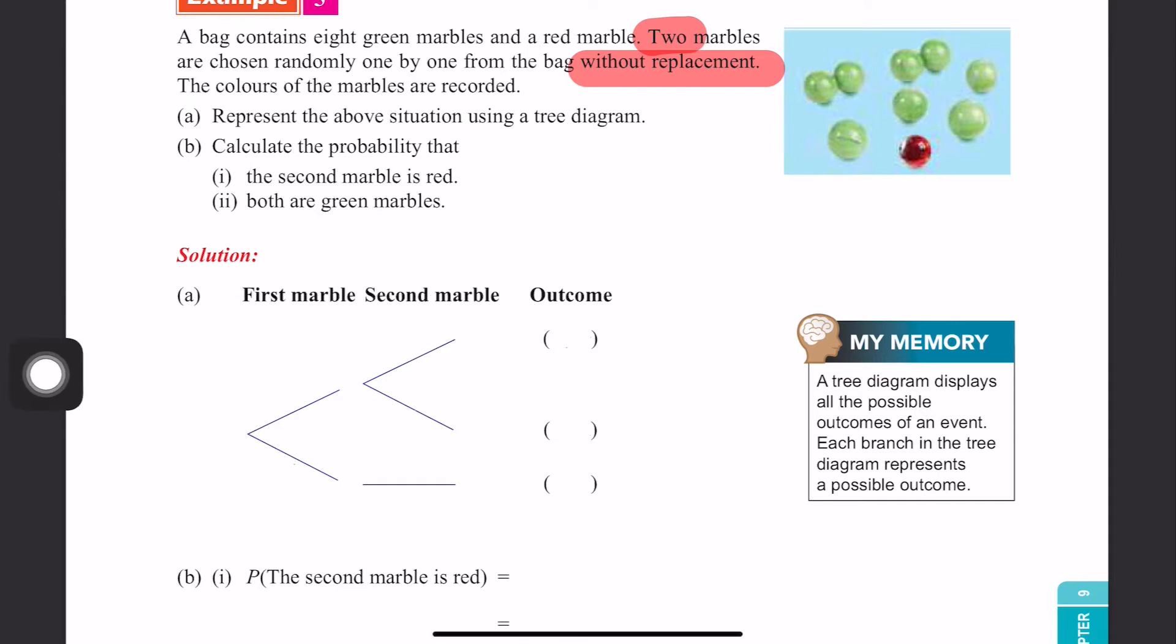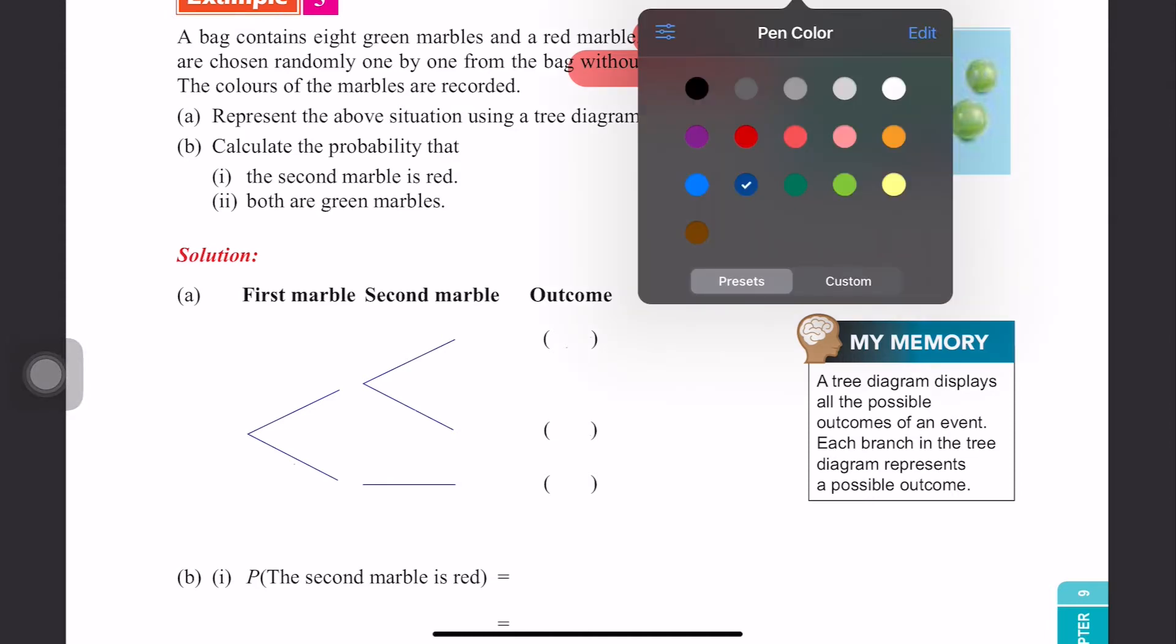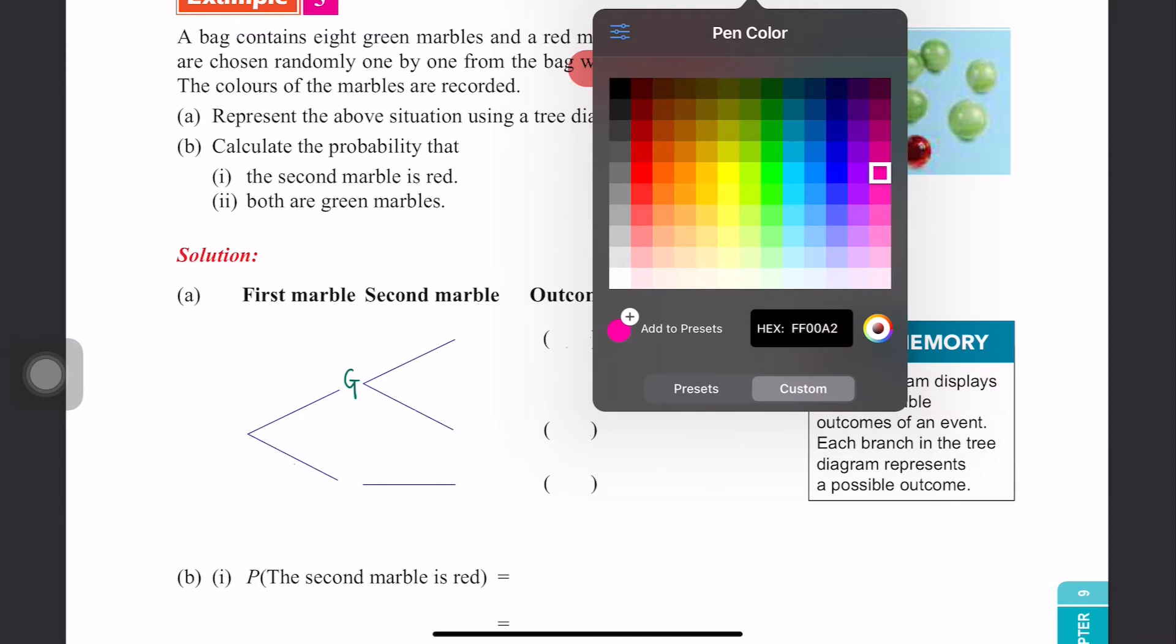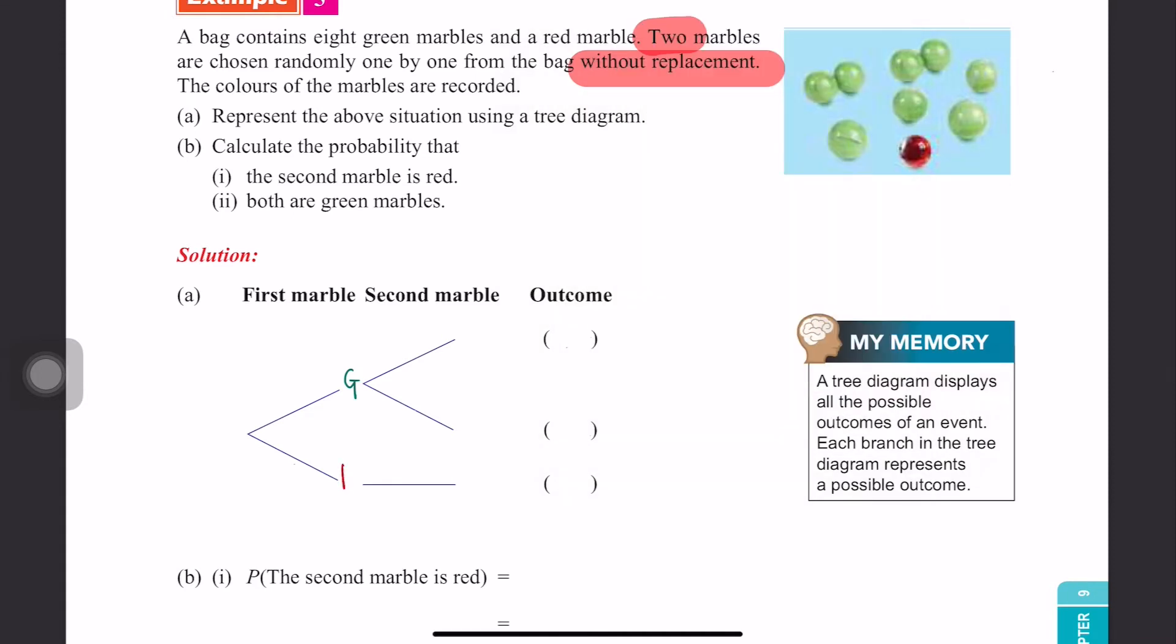For example, for the first marble, maybe I get green, or maybe I get red. So what is the probability of getting a green marble? We have 1, 2, 3, 4, 5, 6, 7, 8. So 8 green marbles.